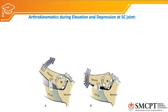Now, arthrokinematics during elevation and depression at the sternoclavicular joint. The sternoclavicular joint has saddle-shaped articulating surfaces. During elevation and depression, the convex surface of the clavicle moves on the concave surface of the sternum. So during elevation, the bone is moving upward and the sliding will be downward, because the convex surface of the clavicle is moving on the concave surface of the sternum.